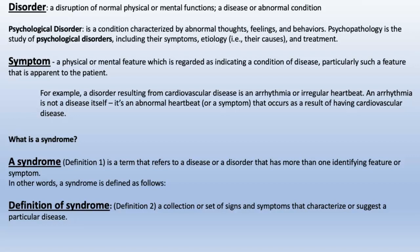A symptom is just one behavior. For example, an arrhythmia or irregular heartbeat is not necessarily a disease itself — it's an abnormal heartbeat or symptom that occurs as a result of cardiovascular disease. But you can also have an arrhythmia caused by something else entirely. So understand that a symptom is a small part, but not the whole.